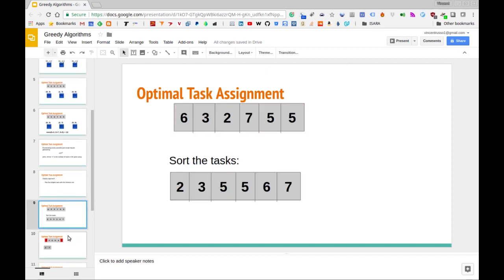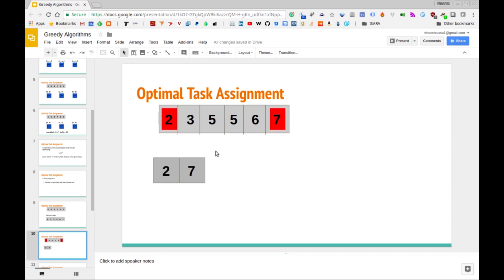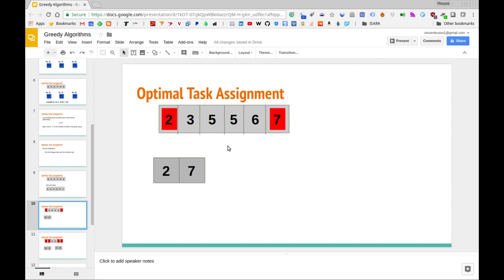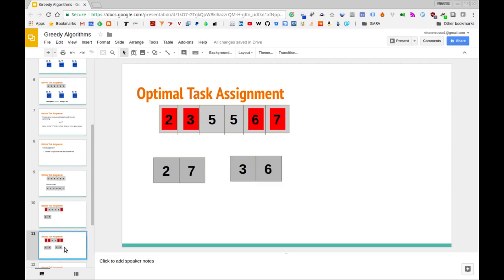And then what we want to do is pick the longest duration and the shortest duration. That's going to be our first pair. So we pick seven and two - that's our first pair, the first two tasks we'll assign to a worker. Then we do the same approach as we go through the array. So now we pick the next biggest one and the next smallest one, which gives us three and six. Because we've sorted it, we're just kind of moving inwards.